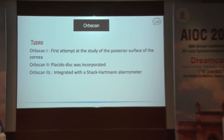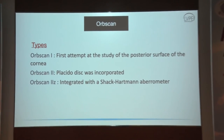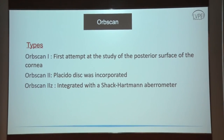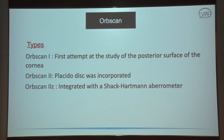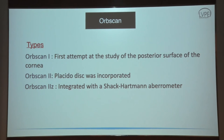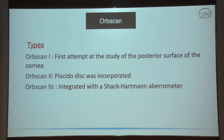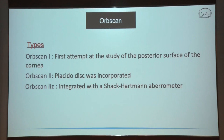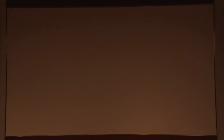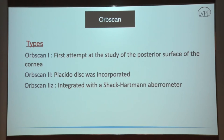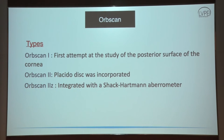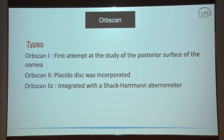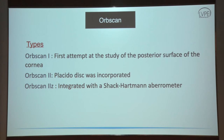There are different types of Orbscan. Orbscan I was the first attempt at studying the posterior surface. Orbscan II incorporated the Placido disc into the slit scanning system. And now there is an Orbscan IIz, which also has an aberrometer included in the topography.